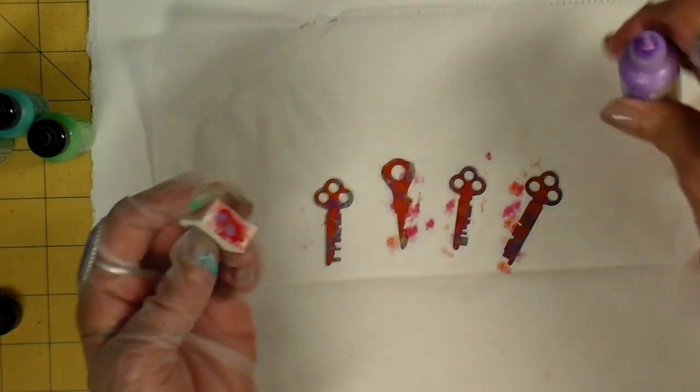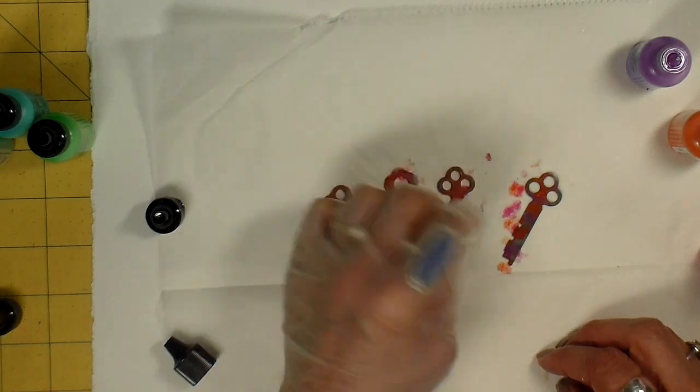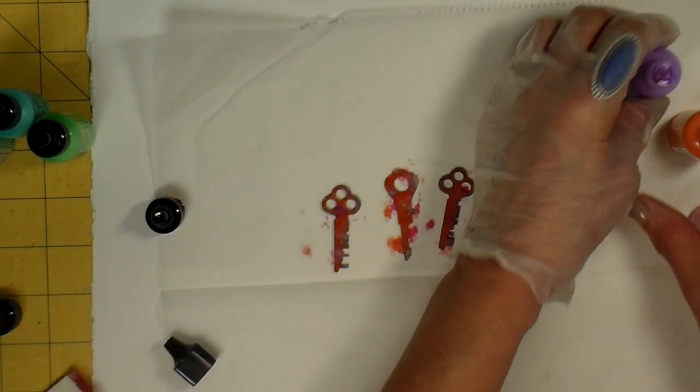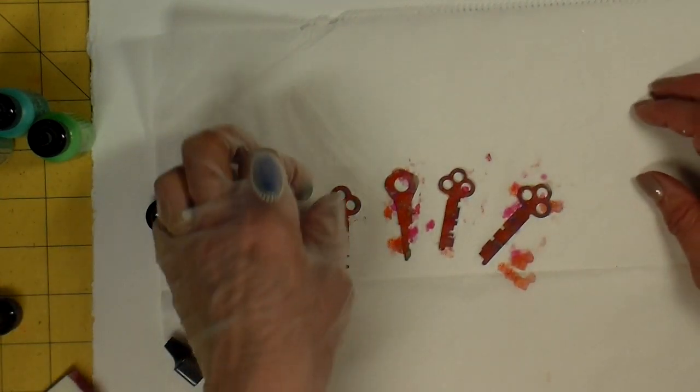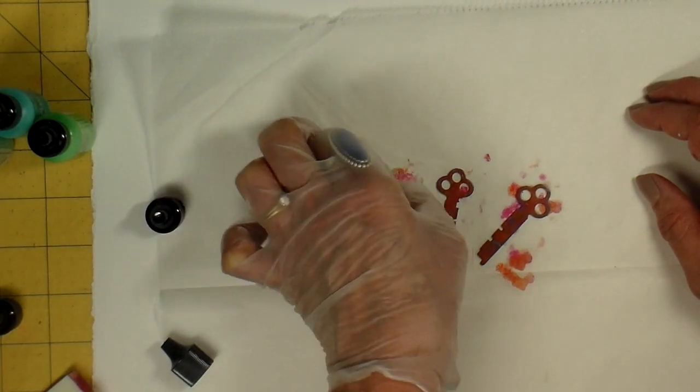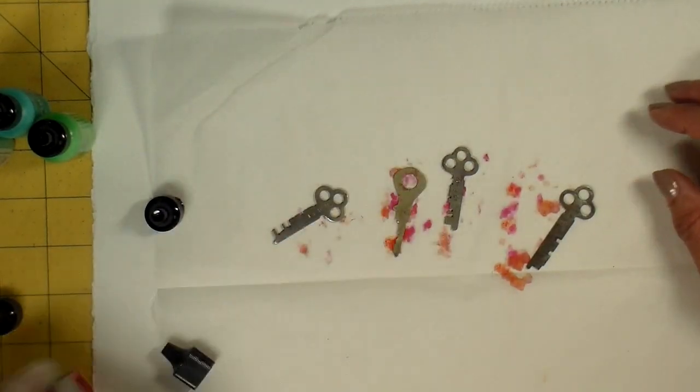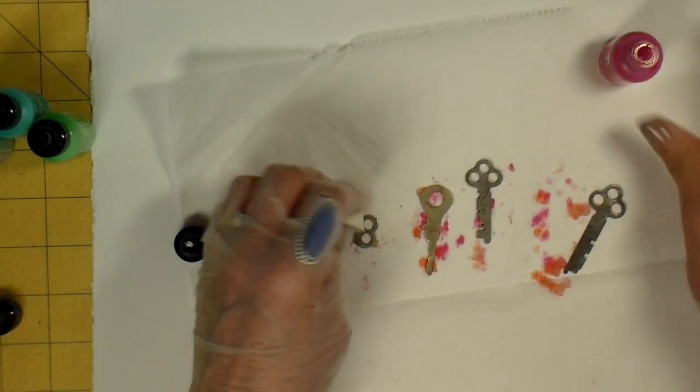They also dry very, very quickly. One last color. Almost as quick as you put it on, they're dry. You can flip them over and do the other side, and I'll be doing exactly the same thing, just using the same sponge and dabbing on the colors.